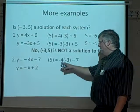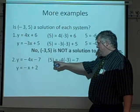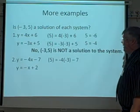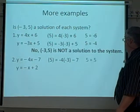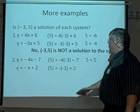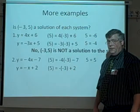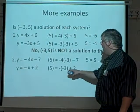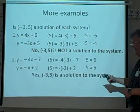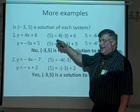How about this one? When we plug in 5 and -3 for the x and y values here, we get 5 = -4(-3) - 7. -4 times -3 is positive 12. Minus 7 is going to give me 5. 5 equals 5. So far, so good. Let's look at the second one. We plug in this and we get 5 = -(-3) + 2. Well, negative over negative is a positive. So it's positive 3 plus 2. We get 5 equals 5. Yes, (-3, 5) is a solution to this system, but not to that one.